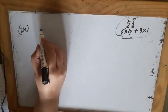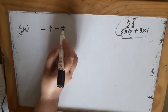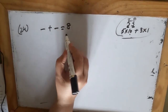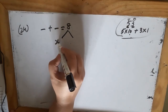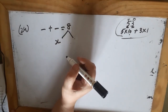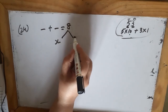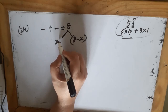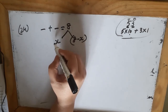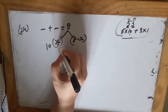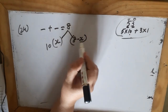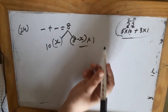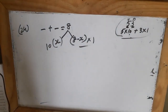They are saying a two-digit number whose digits add up to 8. So I can say let my first digit be x, and then the second digit will be 8 minus x. Now x will be at the tens place, so I will multiply this with 10, and 8 minus x is at the ones place so it will be multiplied by 1.